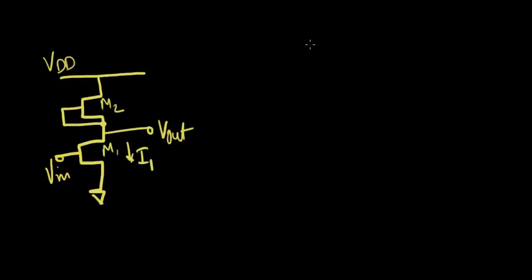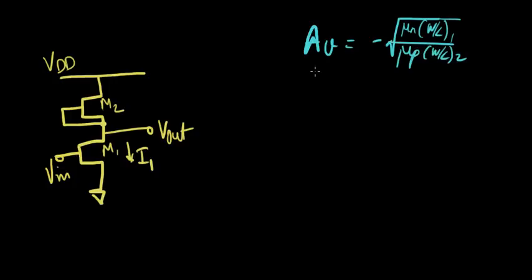It was not much different. It was just Av equals minus root of mu n W over L1 over mu p W over L2, not considering the body effect and channel modulation.